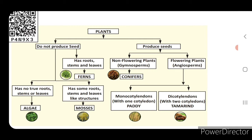In the 'do not produce seed' group: plants having roots, stems and leaves - example ferns; plants not having any true roots, stems or leaves - example algae; and plants having some root-like, stem-like and leaf-like structures - example mosses. Coming to the 'produce seeds' group, it is again classified into two types: non-flowering plants and flowering plants.